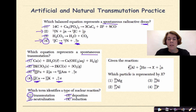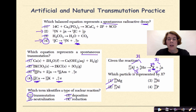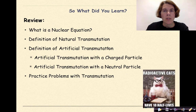Final question: aluminum-27 plus an alpha particle yields X and one neutron — which particle is X? Adding mass numbers: 27 + 4 = 31; subtracting the neutron: 31 − 1 = 30. Adding atomic numbers: 13 + 2 = 15; subtracting zero: atomic number is 15. Option one is out (atomic number 12), option two is out (atomic number 13). Both options three and four have the right mass number, but we need atomic number 15 — that is phosphorus-30.